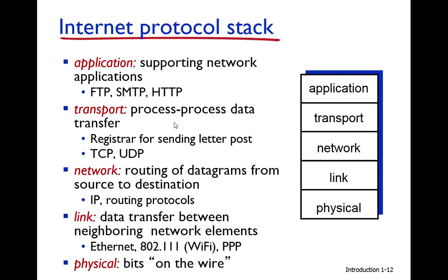So far we have discussed the functionality of the application layer, transport layer, and network layer. The transport layer is responsible for moving data from process to process, from application to application — like the working of a registrar from CIUR campus to the registrar at Islamic University campus. The application layer has different protocols which we will study one by one: FTP, SMTP, HTTP. In the next chapter we will discuss the HTTP protocol in detail.